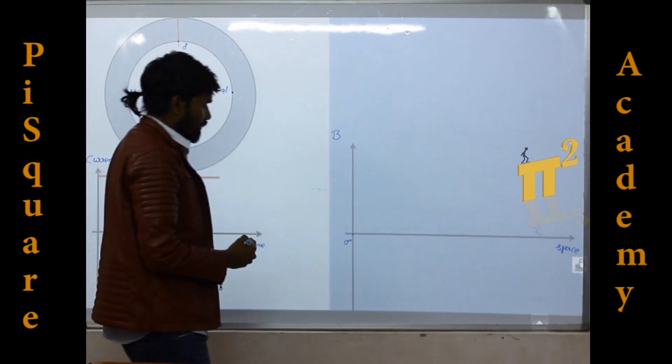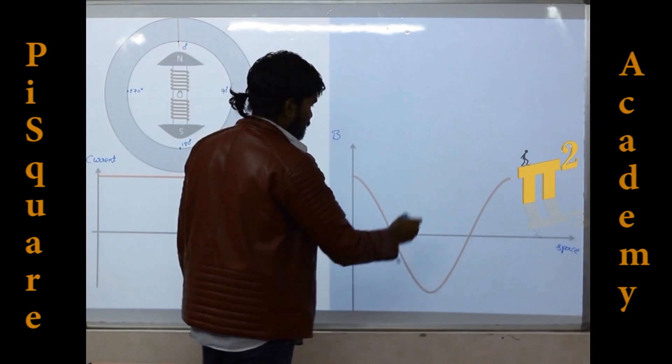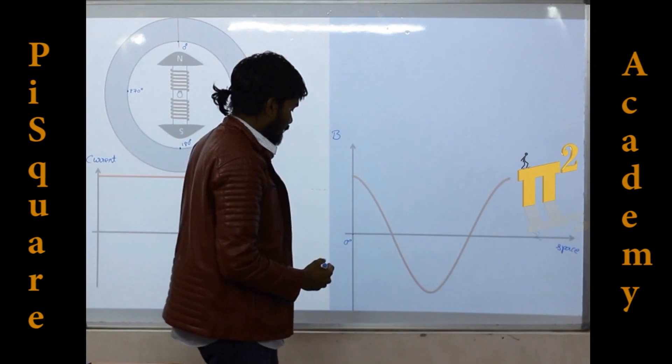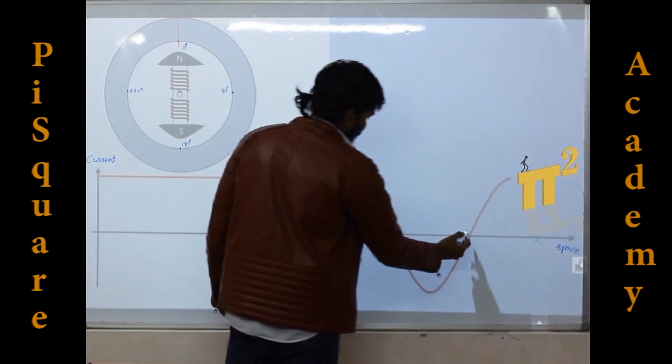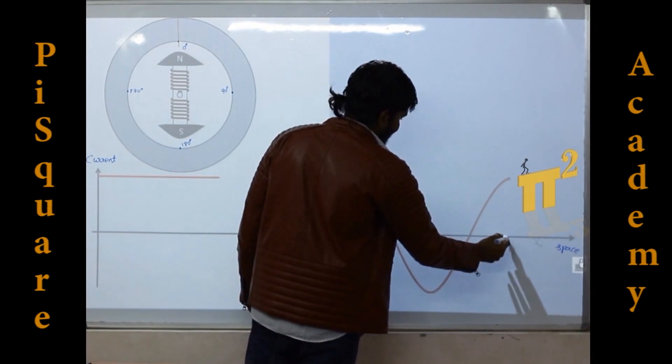So if I plot that flux density shape, this is the flux density: 0 degrees, 90 degrees, 180 degrees, 270 degrees, 360 degrees.